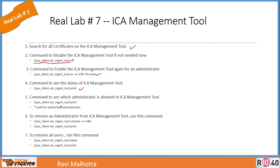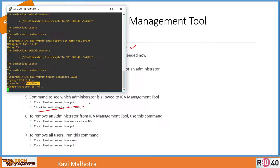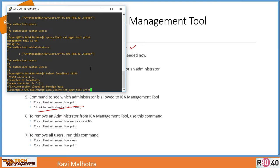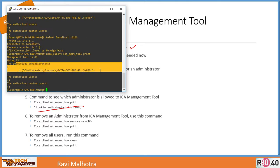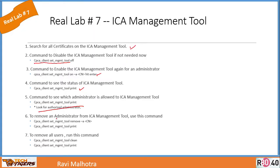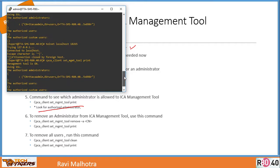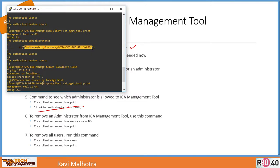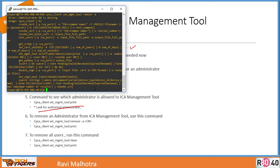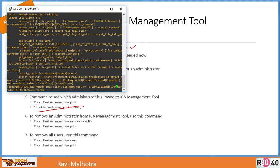This is a bonus lab — follow it carefully. To see the status and which administrator is authorized, run the print command and look for the authorized administrator field. To remove an administrator from the ICA management tool, run: 'cpca_client set_management_tool remove -a' followed by the administrator's CN value.